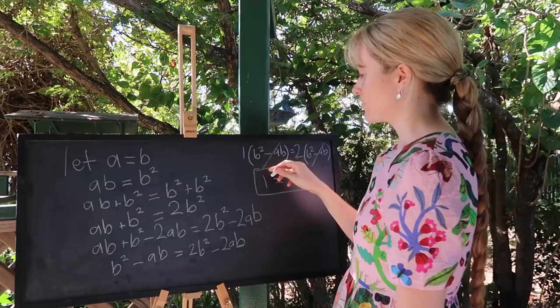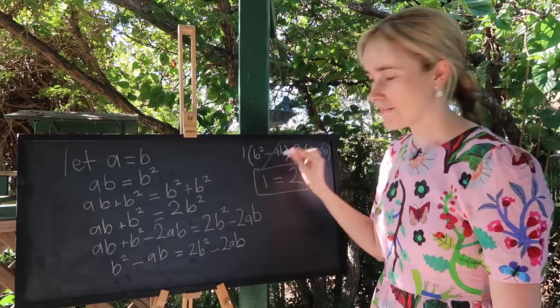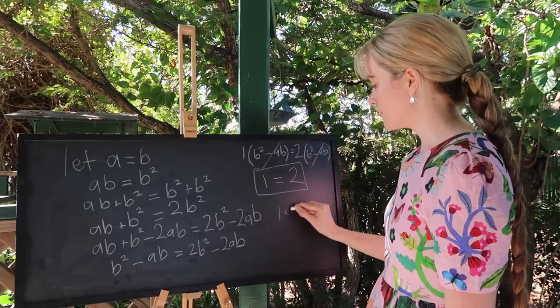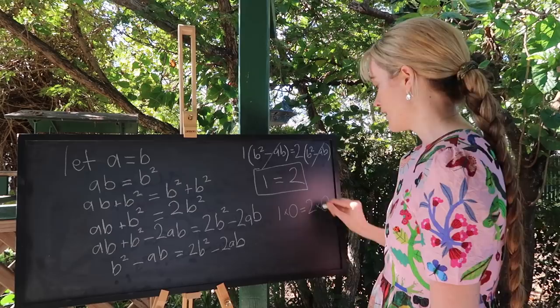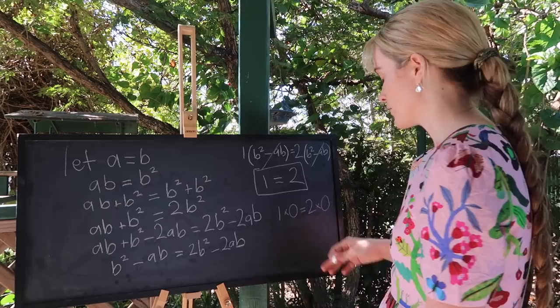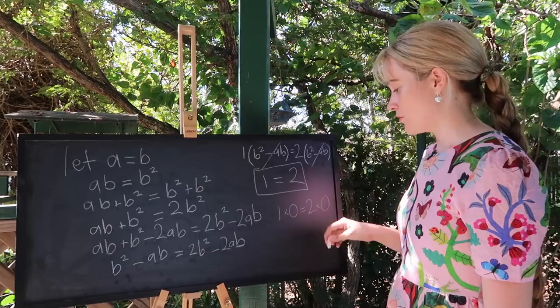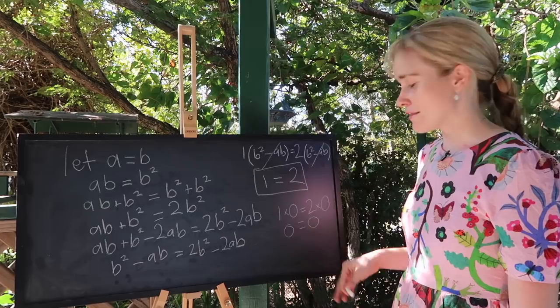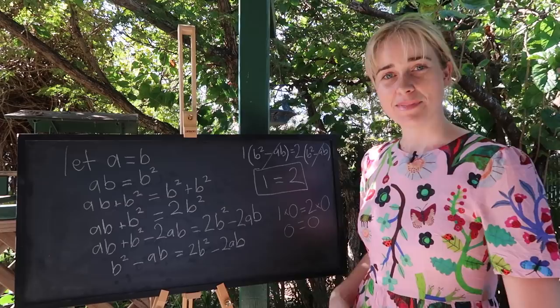B squared since A and B are equal to each other is actually the same as A times B. So this in brackets is in fact equal to zero and what we have on this line up here is that one times zero is equal to two times zero. Now I mean sure anything times zero is going to be equal to zero so these one and two could have been replaced by literally anything. All this really shows is that zero is equal to zero. So if we've proved anything that's what we've proved here not that one is equal to two.